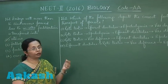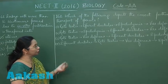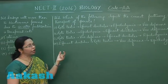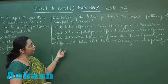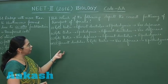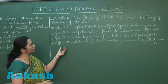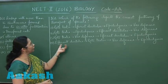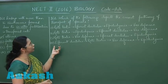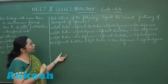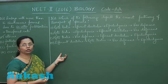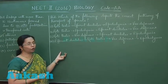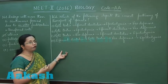Our next question 162: we have to find the correct pathway of sperm transport. The various paths in the male reproductive system — the sperms are formed in the seminiferous tubules, and from there they move to the rete testis. The rete testis opens into the vasa efferentia, also called efferent ductules, which leave the testis.